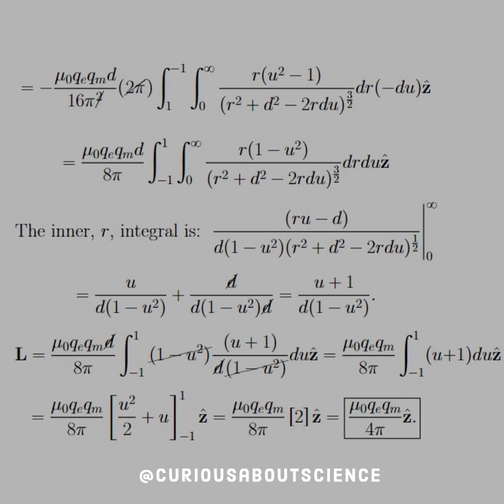Now we're left with the negative 1 to 1 integral, and we see here that when we substitute in this result, the d cancels with the d from above in the constants. And we also see that when we plug this in, the 1 minus u squared from the fraction before will cancel with the denominator. So we're left with u plus 1 du. That's a pretty quick integral to deal with, and we see that that yields a fraction of 2. And from there, we simplify down to L equal mu naught qe qm over 4 pi in the z-hat direction.